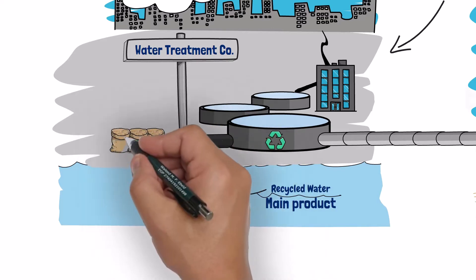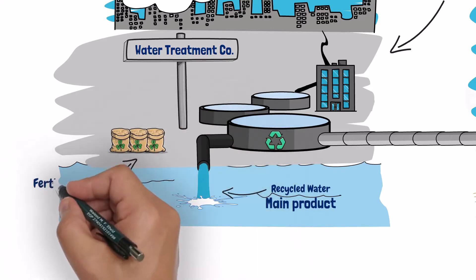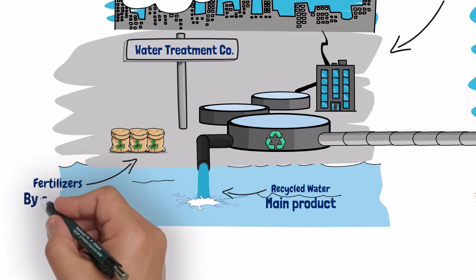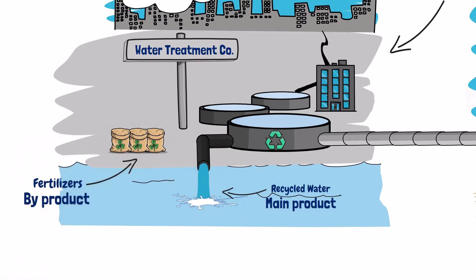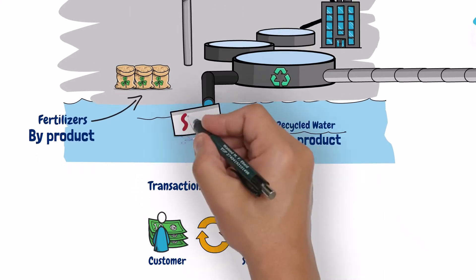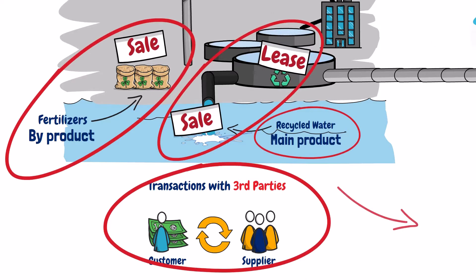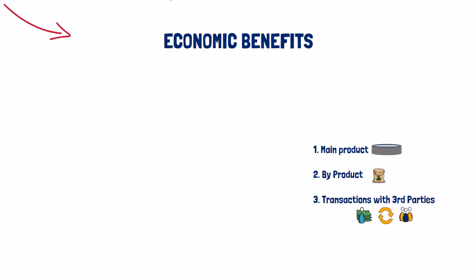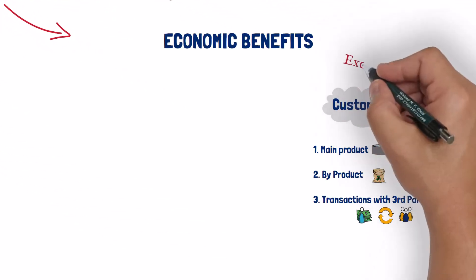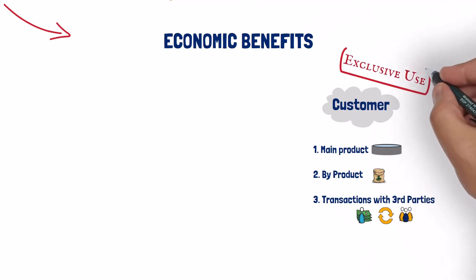Other economic benefits include salts — the byproducts generated during the water recycling process that can be used after further processing as fertilizers. Additionally, benefits generated from commercial transactions with third parties, for example, revenue from selling recycled water, or selling fertilizers to third parties, or even the benefits received from subleasing the whole water treatment facility to a third party. These are examples of the economic benefits that the customer is entitled to if he has an exclusive use of the asset.